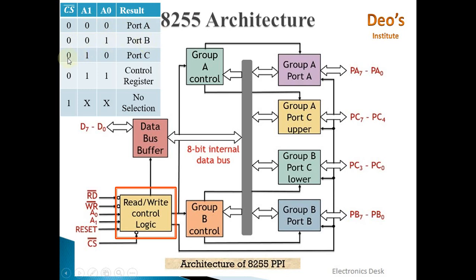When chip select is 0 and A1, A0 are 1,1 — the control register is selected. If chip select bar is 1, then whatever the values of A1 and A0 are, no selection will be done because 8255 is not enabled in that case.